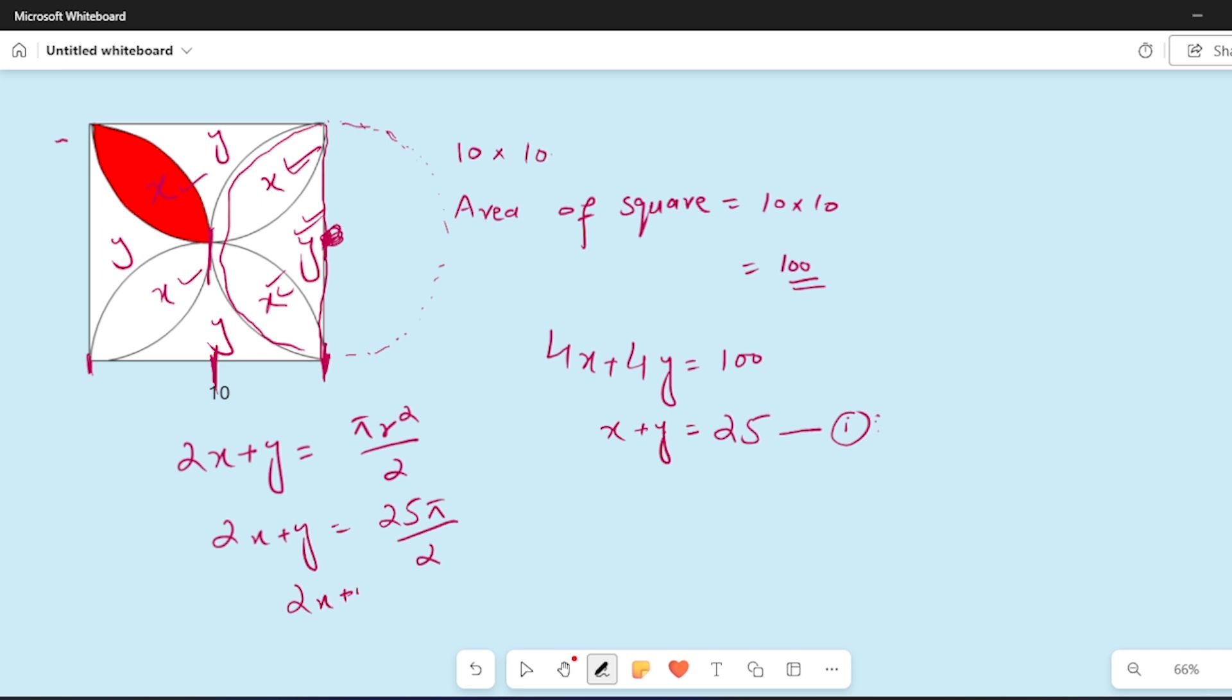2x plus y is equal to 39.25. Now this equation number 2 and this equation number 1, we simultaneously solve. We will get x and y, will get x.